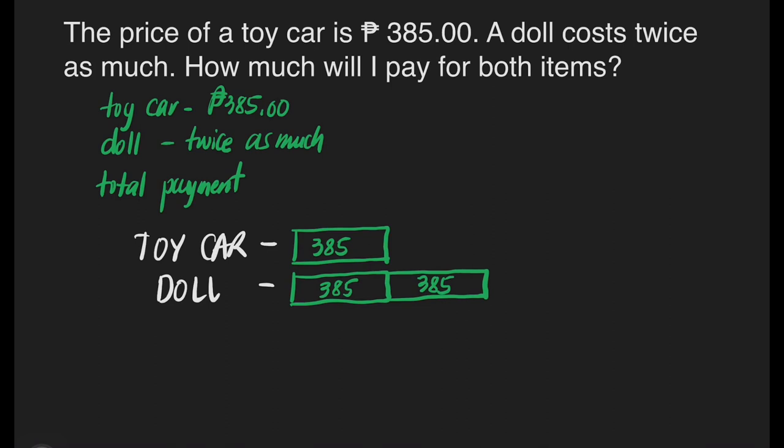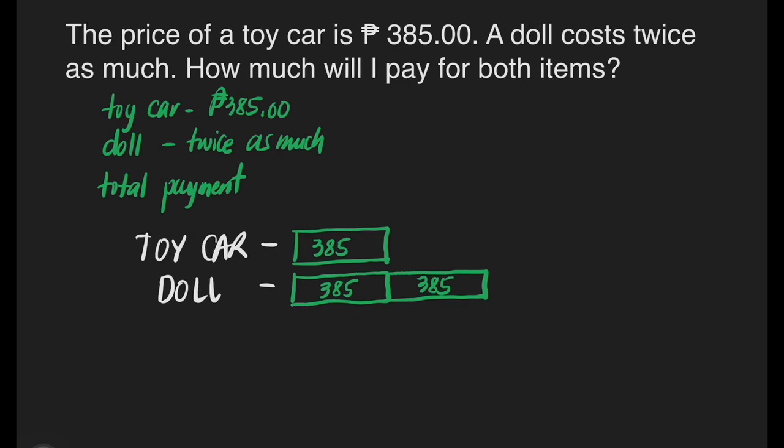So now the question is: how much is one doll? Because we're looking for the price of the doll and the price of the toy car, we will add these prices together so that we will know the total payment. So we need to find first the price of the doll. We can solve for it by adding 385 pesos twice, or we can just multiply 385 by 2.